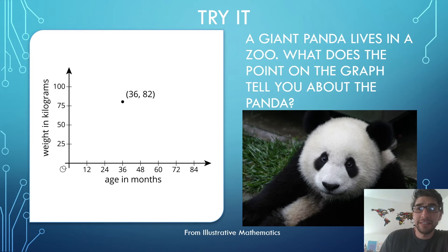Now it's your turn. Here's a giant panda lives in a zoo. What does the point on the graph tell you about the panda? This is a problem from Illustrative Mathematics. If we look at the horizontal and vertical axes, we can tell some things about the panda. (36,82) means that the panda is 36 months in age. 82 means that the panda weighs 82 kilograms.